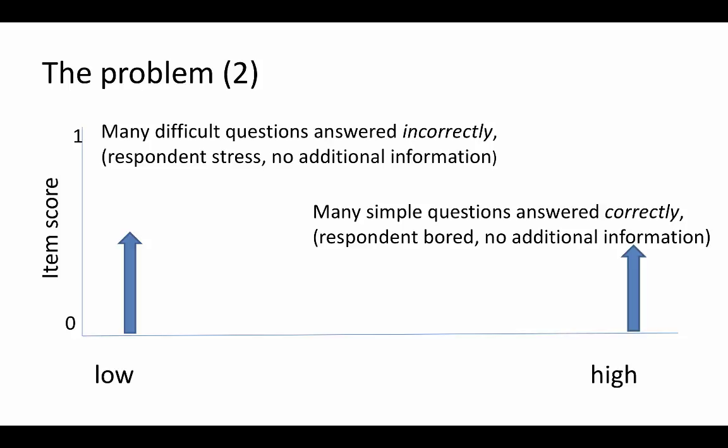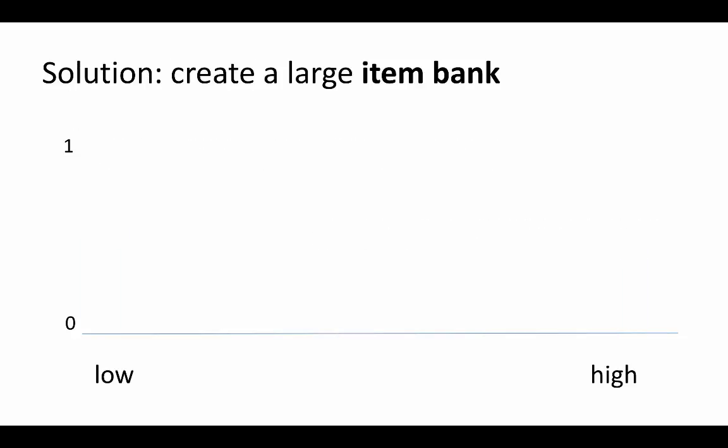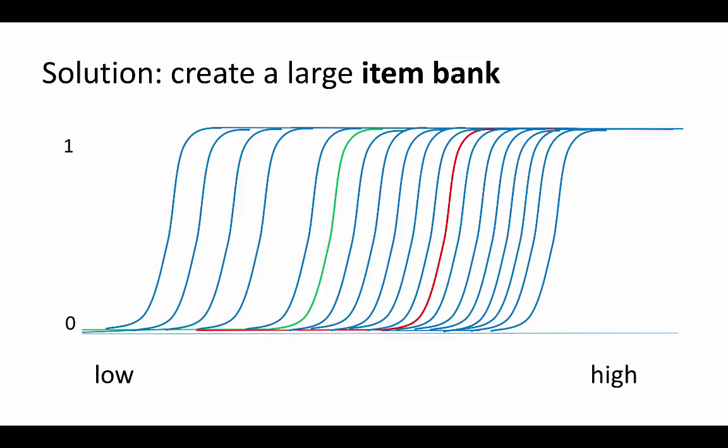All these problems together lead to the idea of computerized adaptive testing. The solution is to create a huge item bank and study the difficulty and specificity of all these items. We create an item bank — this is, of course, an example with almost perfect items.